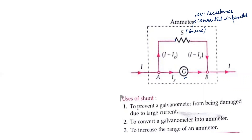What is a shunt? If in any circuit you place a very small amount of resistance in parallel, that is called shunting. There are three reasons to use a shunt: first, it will protect the galvanometer from damage due to large current; second, it converts the galvanometer into an ammeter; and third, it increases the range of the ammeter.